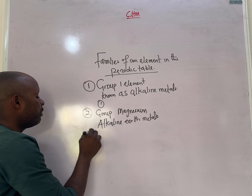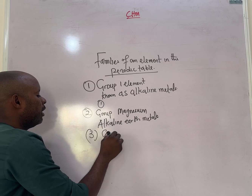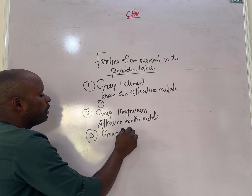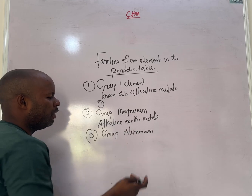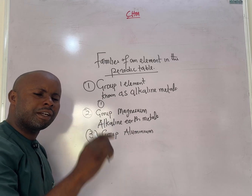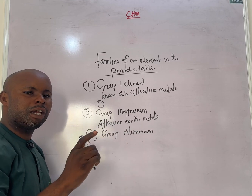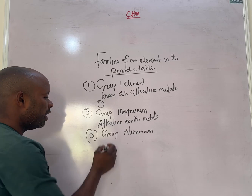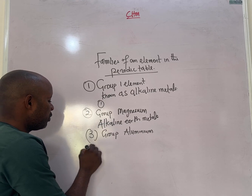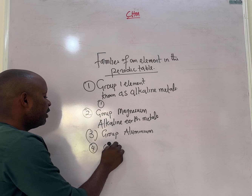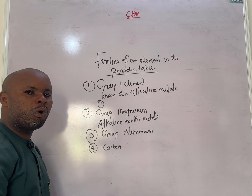Group three elements — a very good example is aluminium, which has three electrons in the outer shell. It is less reactive compared to group two elements. Group four elements contain carbon, and they are also less reactive.